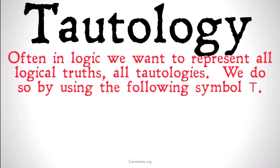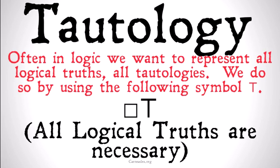Tautology. Often in logic, we want to represent all logical truths — all tautologies — all as one, without having to say or explain we're talking about all logical truths or all tautologies of a particular system. We do so by using this symbol: a block T that looks like ⊤. For example, if we wrote box ⊤, that would mean that all logical truths are necessary. It might be an axiom you would include in an alethic modal logic. The point is that ⊤ is representing all logical truths.